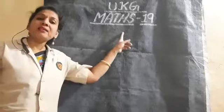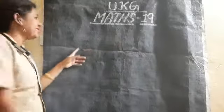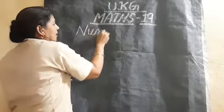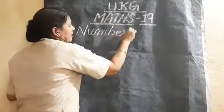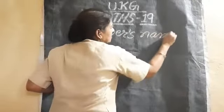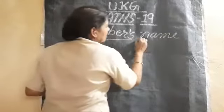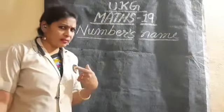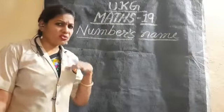First we will write a very good heading — that is N-U-M-B-E-R-S — numbers name from 21 up to 30, or 26 to 30.